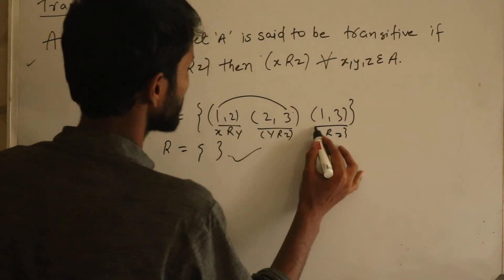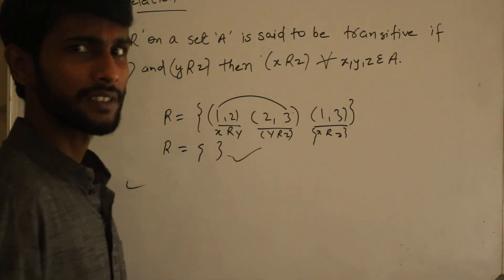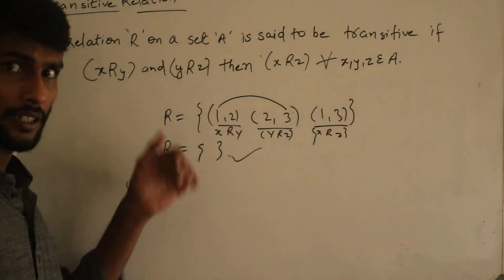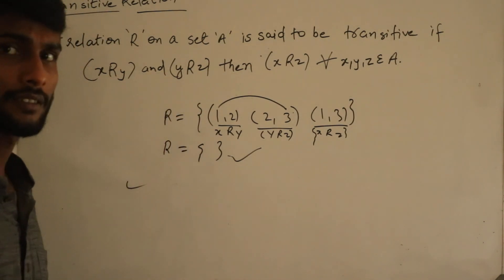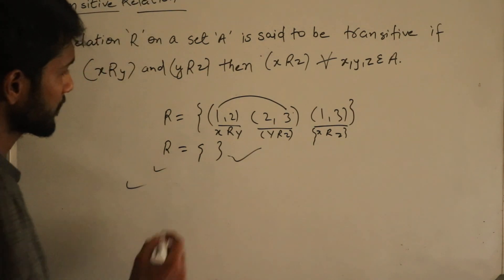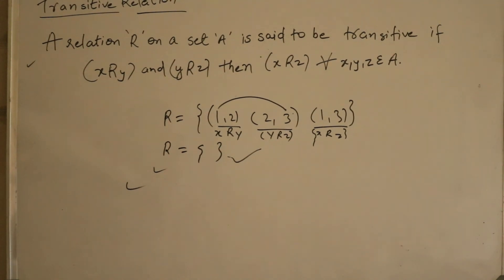So in transitive relation, only this much is okay for exam purpose. We will tell you. Now we will solve the questions on these relations. Ok fine 2 1 2 2 3 4.